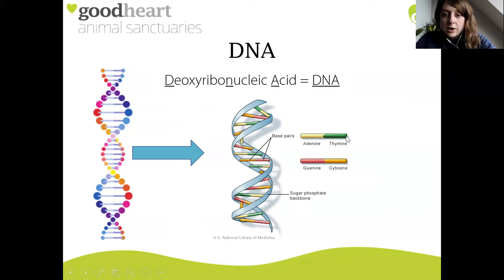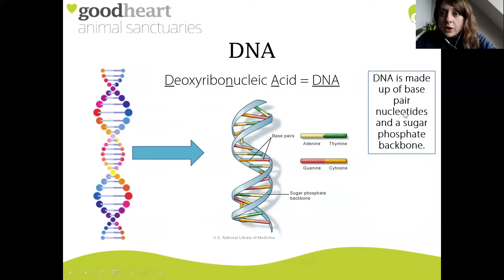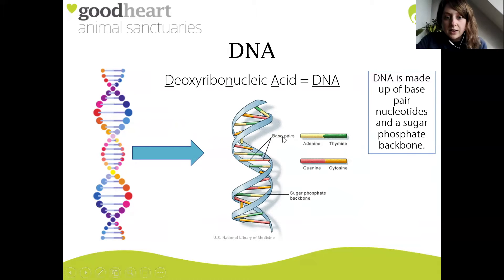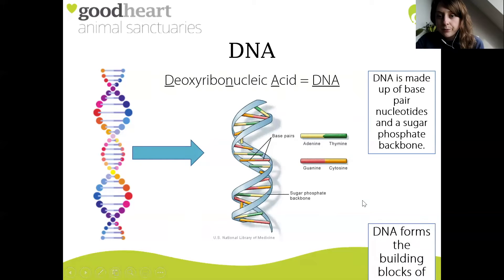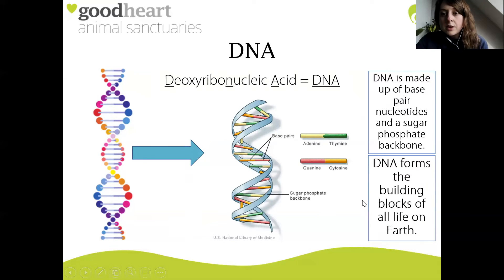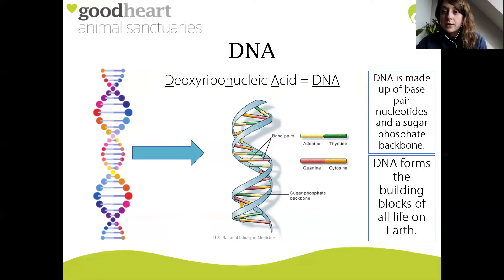Adenine always bonds with thymine, and guanine always bonds with cytosine. So DNA is made up of base pair nucleotides - the A, T, C and G - and they're also made up of that phosphate backbone. DNA is really important and forms the building blocks of all life on earth.